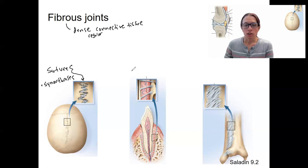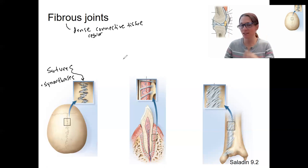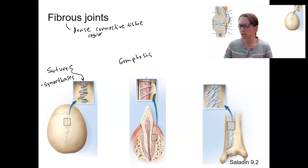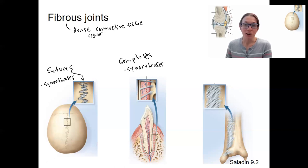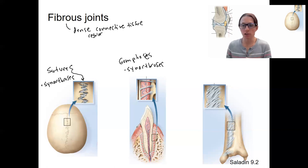Then there are fibers that connect your teeth to the bones of your jaw — the maxilla and mandible — two different bones where your teeth are embedded. These are called gomphoses, and they are also synarthroses: immobile joints where your tooth connects to the bones of your jaw. You want that to be immobile so you can chew things without your teeth moving around.